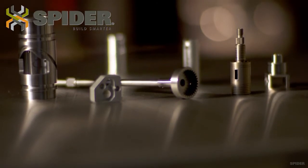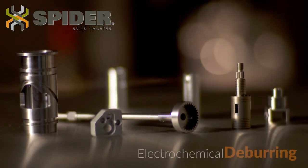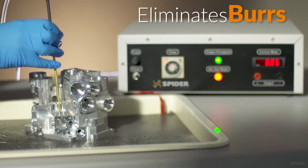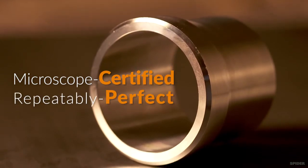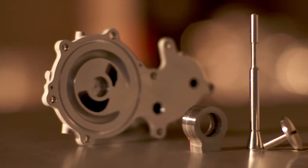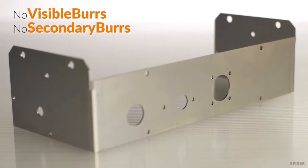In manufacturing, Spider company deburrs and perfects brilliantly engineered parts with electrochemical deburring. Electrochemical deburring eliminates burrs with microscope-certified, repeatably perfect results in a fraction of the time of manual deburring, without leaving visible or secondary burrs.